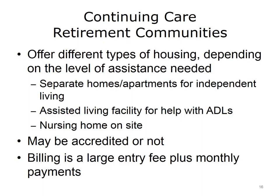Continuing care retirement communities offer various types of housing and levels of care depending on the residents' needs. Relatively independent people live in separate homes or apartments. As their needs change, they can move into an assisted living facility for help with activities of daily living and eventually into a nursing home on-site. These communities may or may not be accredited by the Commission on Accreditation of Rehabilitation Facilities. Charges entail a large entry fee followed by monthly payments.